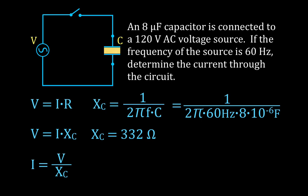And we get that the reactance of this capacitor is 332 ohms. Now we simply plug the values in for the voltage, 120 volts divided by 332 ohms, and we get that the current in this circuit, whether it's the max or the RMS, is 0.36 amperes.